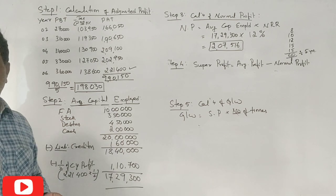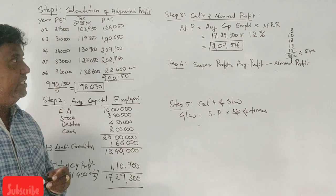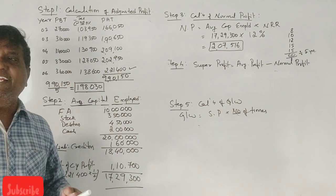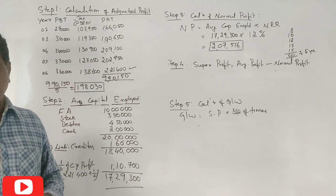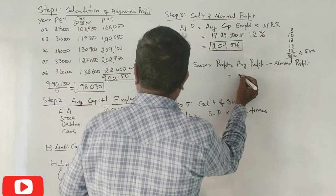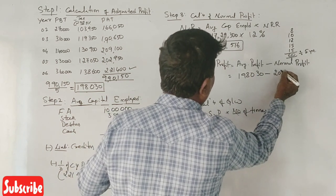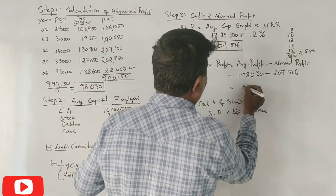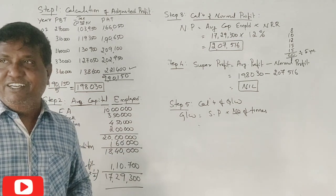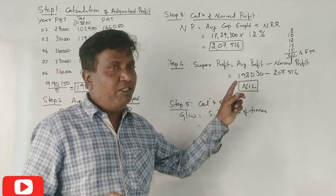Normal profit: 17,29,300 multiplied by 12% equals 2,07,516. Average profit is 1,98,030, normal profit is 2,07,516. So super profit is negative. Average profit minus normal profit equals negative.